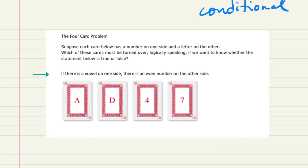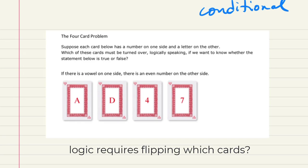The statement here is a conditional: if there is a vowel on one side, then there is an even number on the other side. Which of these cards would you have to flip — at a minimum — to confirm or check whether or not that's actually true? Think about that for a second and then I'll show you the answer.